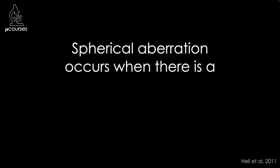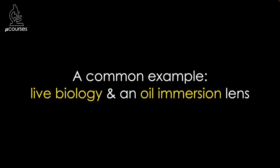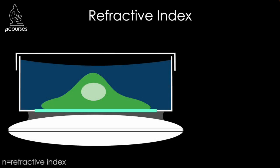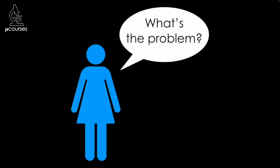Spherical aberration occurs when there is a mismatch in refractive index between the specimen and the lens immersion media. For example, in the very common scenario of imaging live biological samples with an oil immersion lens, the immersion oil refractive index is matched to the refractive index of the coverslip, but the specimen has a different — often lower — refractive index. This is not meant to discourage you from using an oil immersion lens; high numerical aperture oil immersion lenses are often the best choice. However, even the best choices in life come with limitations and compromises.